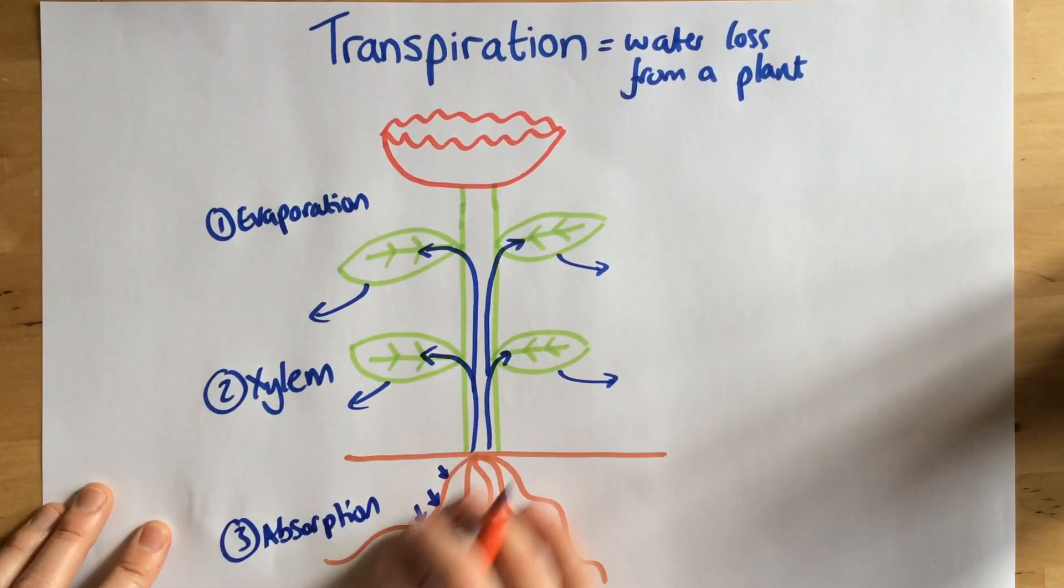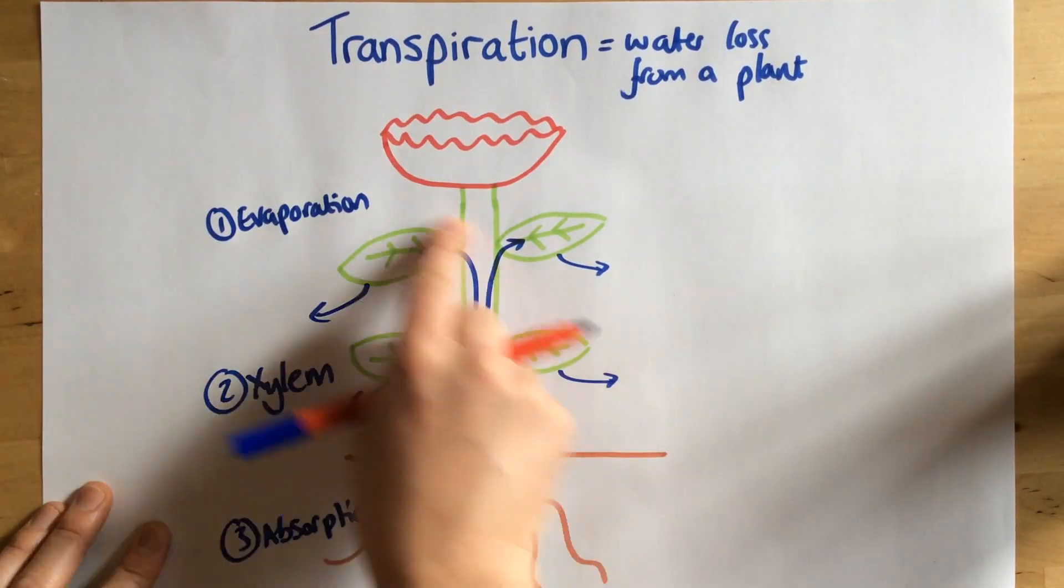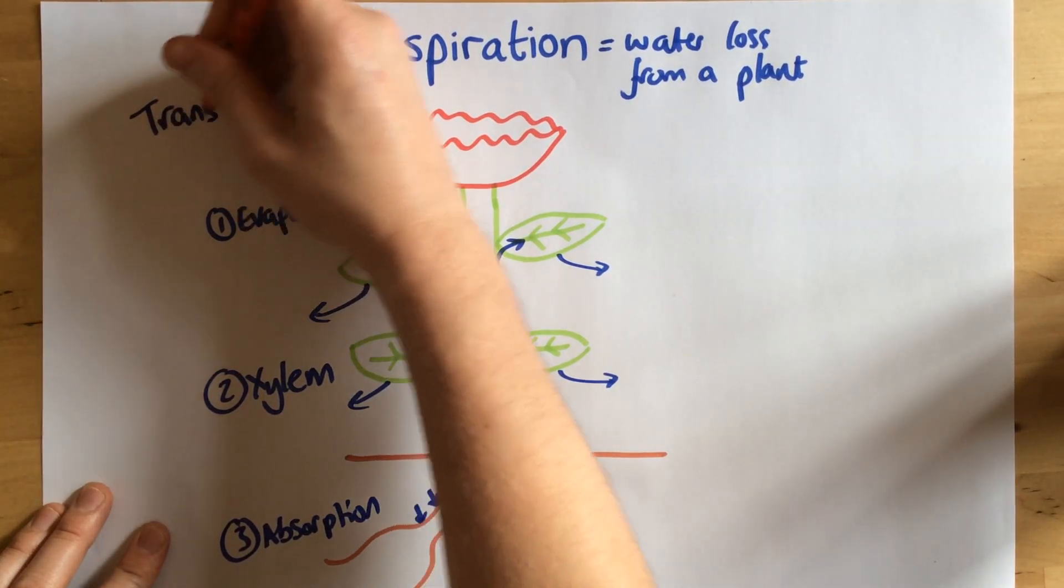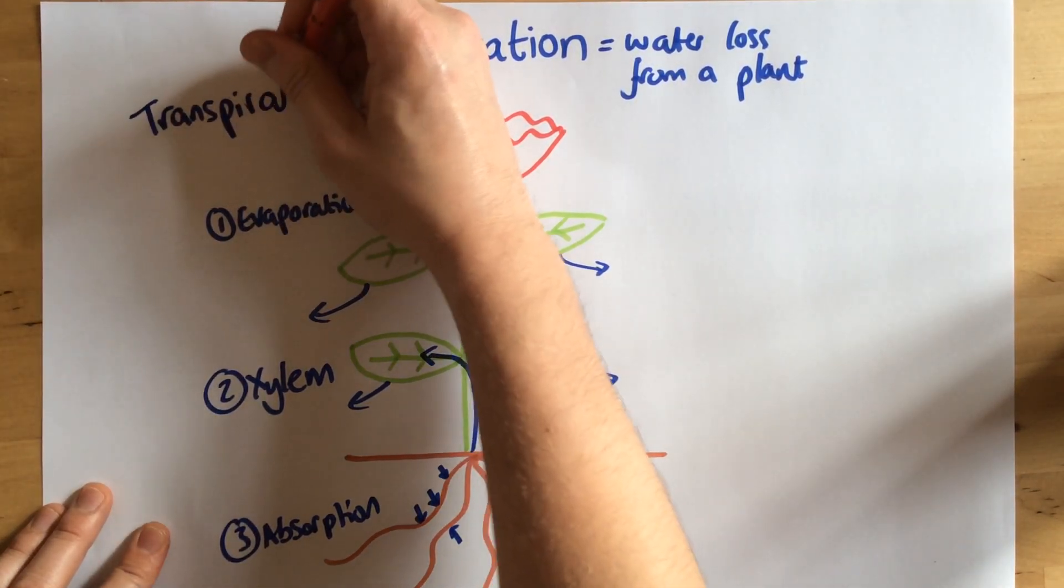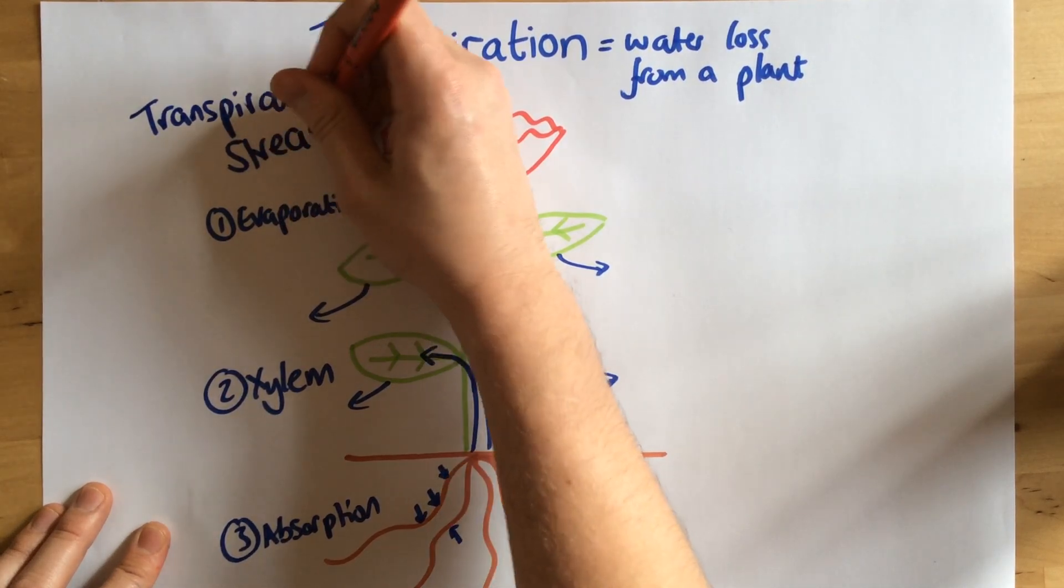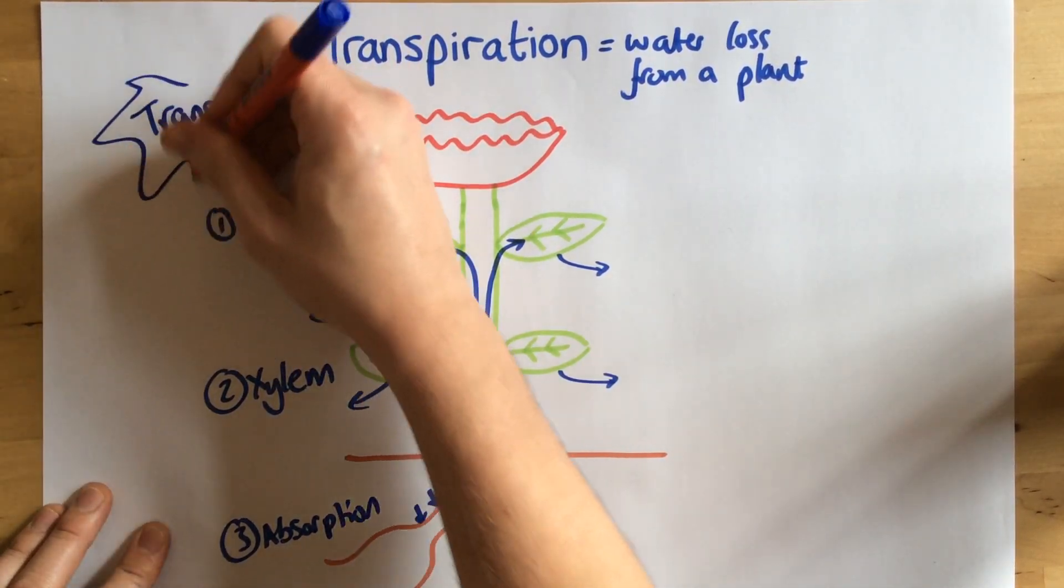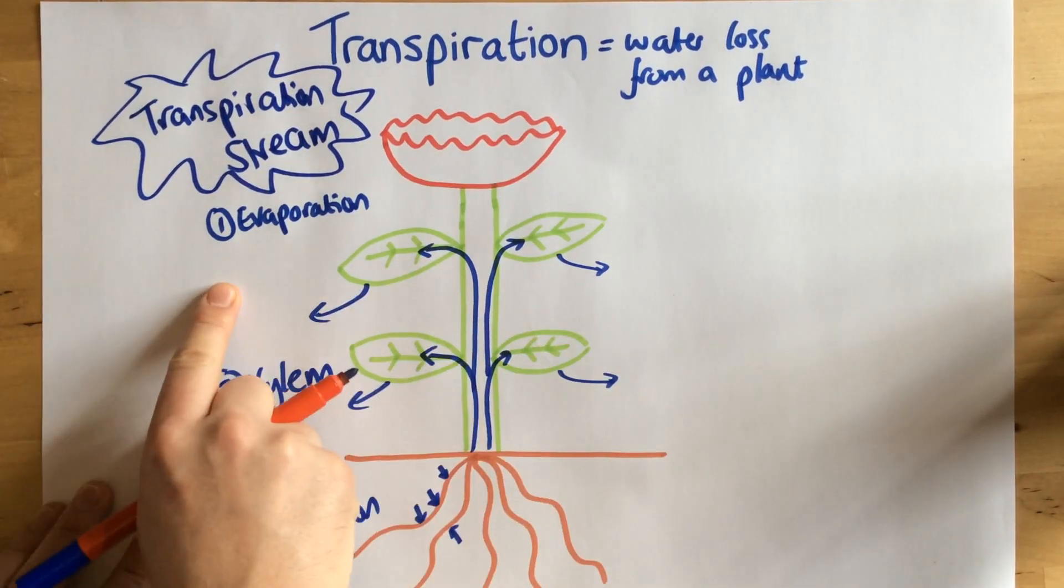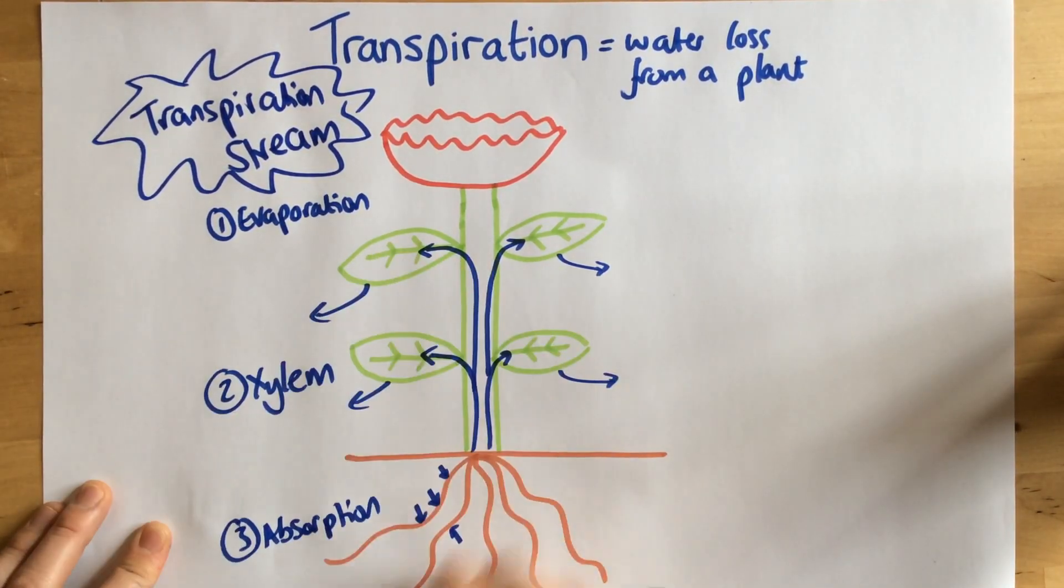Now this whole process is an ongoing process and it's called a transpiration stream. It's just a constant stream of water which leaves the leaves, drawn up through the xylem, and water drawn in through the roots. This keeps on going and going.